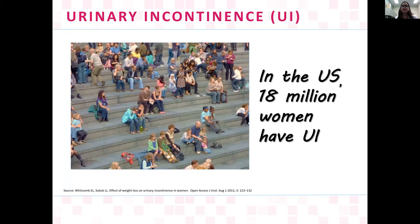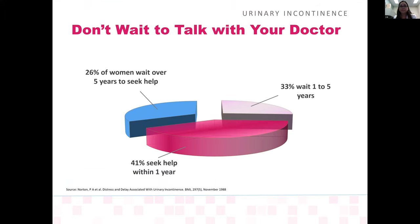In the United States, 18 million women will have urinary incontinence. Do not wait to talk to your doctor. In a study by Dr. Norton, 26% of women will wait over five years to seek help, 33% will wait one to five years, and only 41% will seek help within one year.